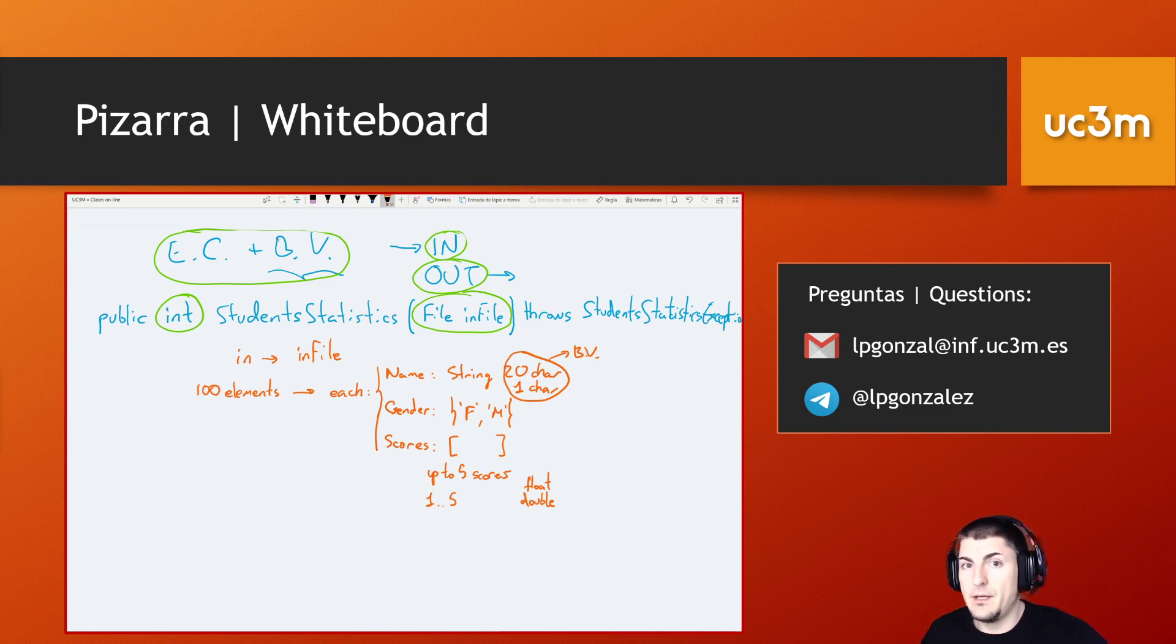Again, if we think about boundary values, we consider the scores to be between 0 or 0.0 if we consider a single decimal, up to 10.0.